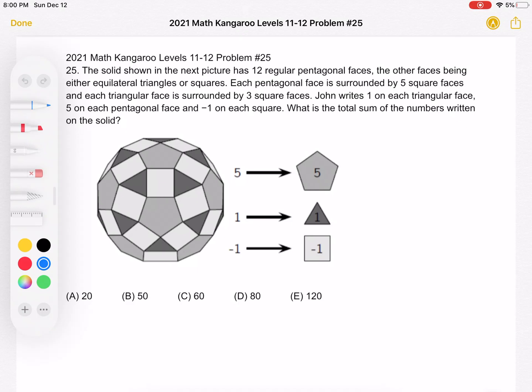And each triangular face is surrounded by 3 square faces. John writes 1 on each triangular face, 5 on each pentagonal face, and negative 1 on each square. What is the total sum of the numbers written on the solid?